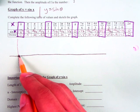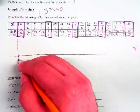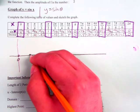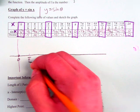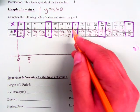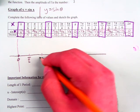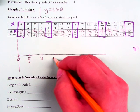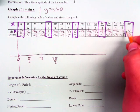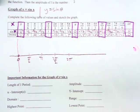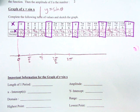So here's what I'm going to do. I'm going to label 0, pi over 2, pi, 3 pi over 2, and then 2 pi on the x-axis.